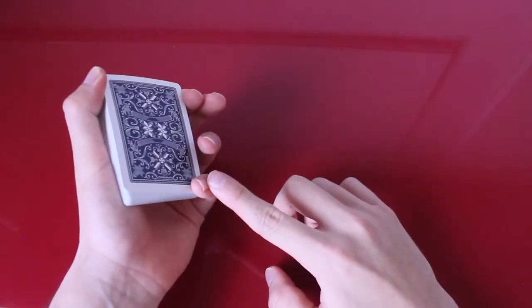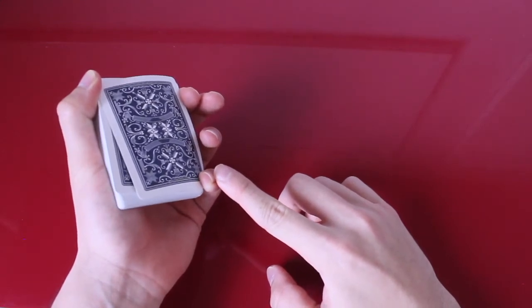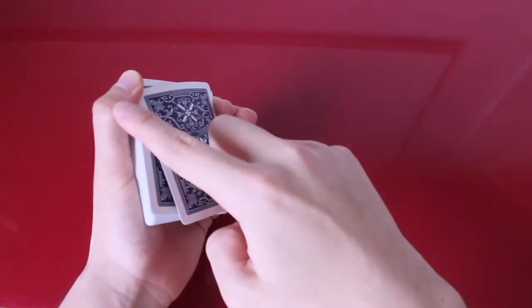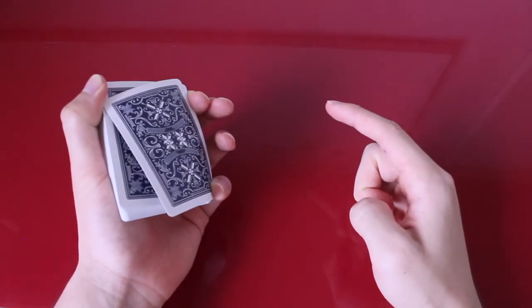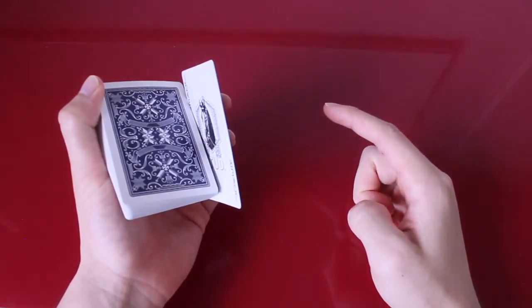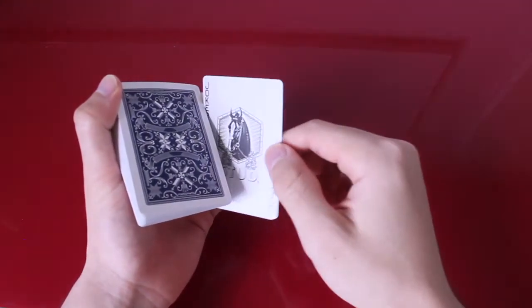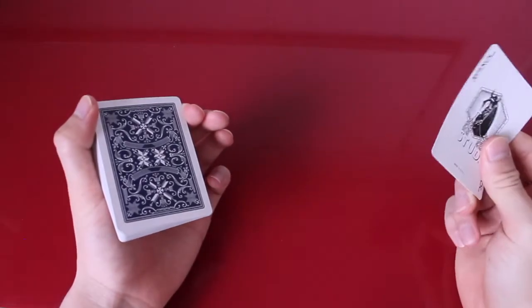The general motion is you're going to take the pinky and pull down very quickly until the card releases from the top left corner like this. And once the card is in this position, as you pull down, it should be able to shoot out into your opposite hand.